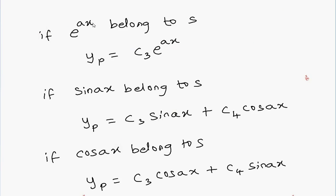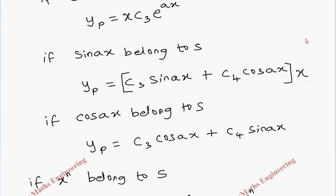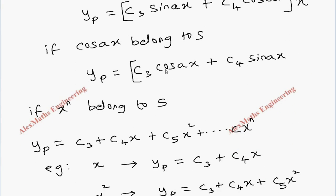If e^(ax) on the right-hand side belongs to the solution set, then we assume the particular integral as c3 e^(ax) but multiplied by x. If sin(ax) belongs to S, since sin(ax) and cos(ax) usually come together, we write the usual particular integral form c3 sin(ax) plus c4 cos(ax) and multiply by x. Similarly, if cos(ax) belongs to S, sin(ax) also belongs to S, so we write the particular integral and multiply by x.